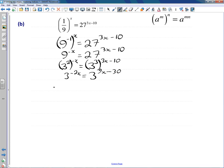So we can conclude here that therefore minus 2x equals 9x minus 30. And I'm going to add 30 to both sides, and I'm going to add 2x to both sides. Now dividing both sides by 11 gives us what x is.